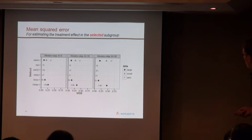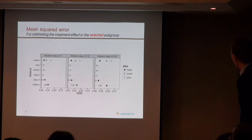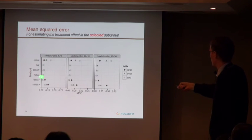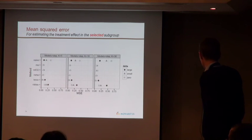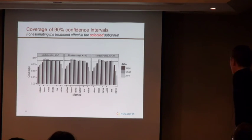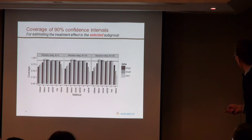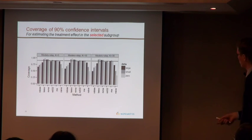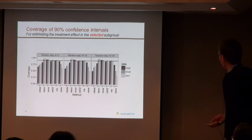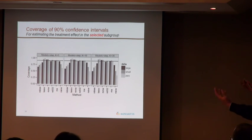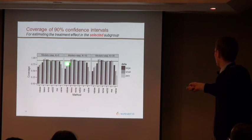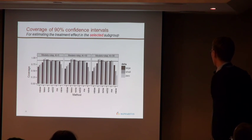In terms of mean squared error for the selected subgroup, these three methods — model averaging, 0.632 resampling, and LASSO — outperform the naive method. LASSO performance depends on the scenario. RS bias doesn't work well. For confidence interval coverage, the naive estimate shows decreasing coverage as more subgroups are examined, due to increasing bias. Model averaging, coming from Bayesian ideas, achieves coverage close to the nominal level. The resampling estimates also perform well. Lasso depends on the scenario, and RS bias again underperforms.